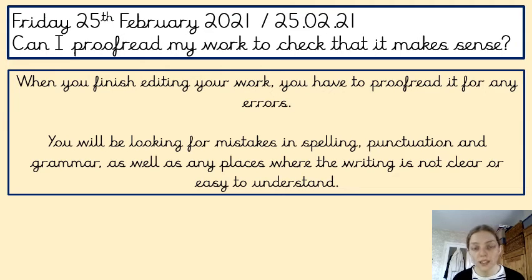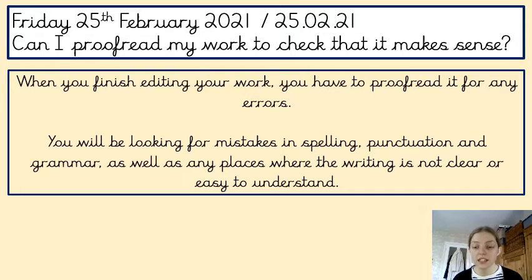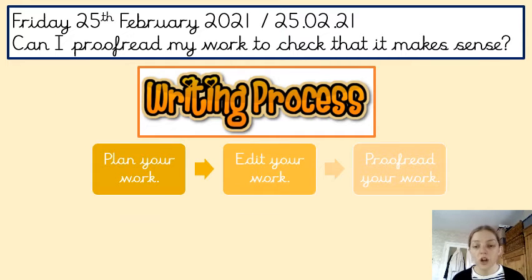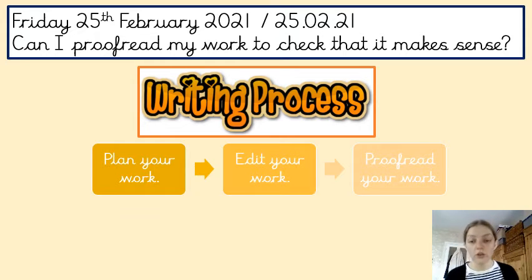When you proofread, you're basically checking for any errors. You edit your work to improve it, and when you proofread you look for errors — it might be a comma in the wrong place or a word spelled incorrectly that you didn't pick up during editing. You're looking for mistakes in spelling, punctuation, and grammar, as well as any places where the writing is unclear or tricky to understand. Proofreading is like double-checking your work before you move on to publish it.